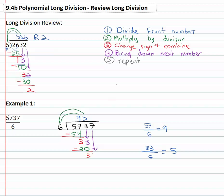Bring down the next number, bring down the thirty seven and we repeat. We take the thirty seven and divide it by six, goes in there six times and then multiply the six times six to get thirty six, change the sign and combine.